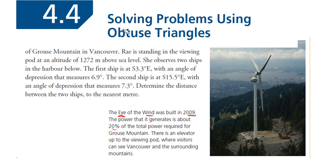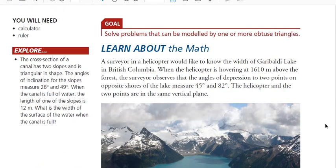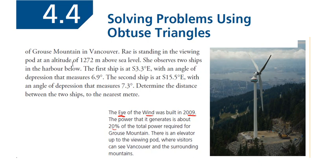Let me read the problem. A wind turbine called the Eye of the Wind is located at the top of Grouse Mountain in Vancouver. Ray is standing in the viewing pod at an altitude of 1272 meters above sea level. She observes two ships in the harbor below. The first ship is south 3.3 degrees east, with an angle of depression that measures 6.9 degrees. So this is a 3D problem.